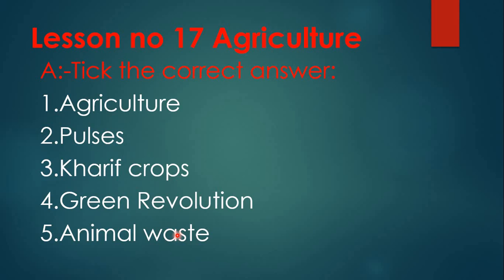Children, you write it all. For example, for the first question, you write option A, option B, option C, option D — four options — and mark the correct answer. So the answers are: first — agriculture, second — pulses, third — kharif crops, fourth — green revolution, fifth — animal waste.